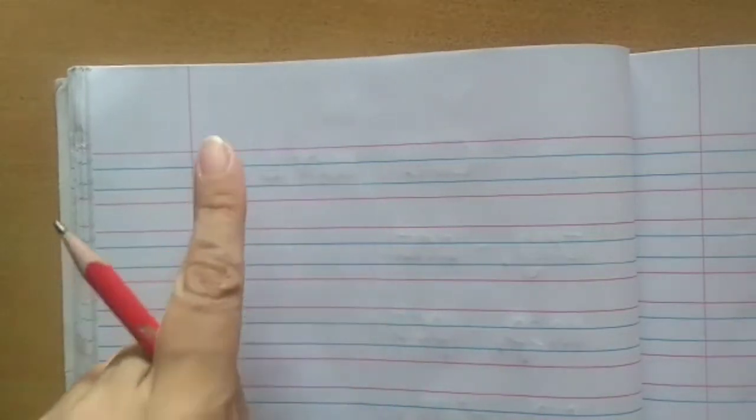Here, as usual on the top left corner, you will write today's date, and in the first line we will write something. For that, we are not going to start from the margin. We are going to leave one finger space and here a small slanting line on the first blue line.